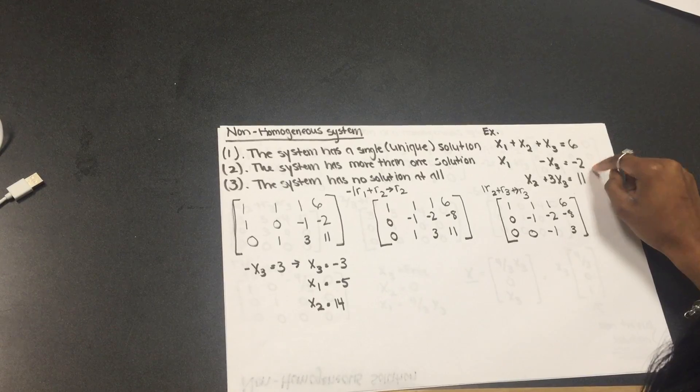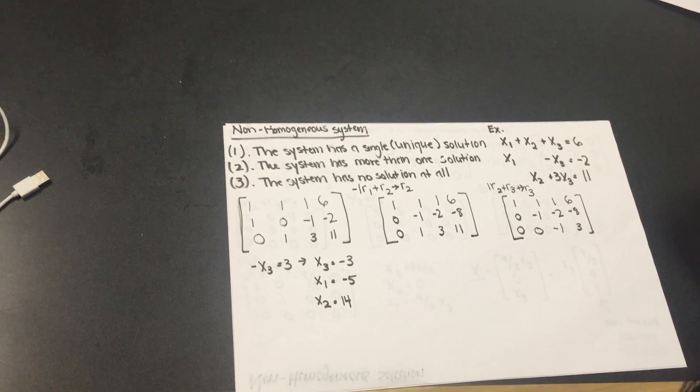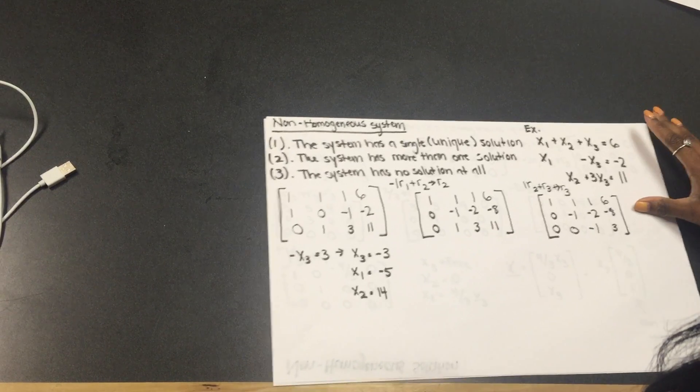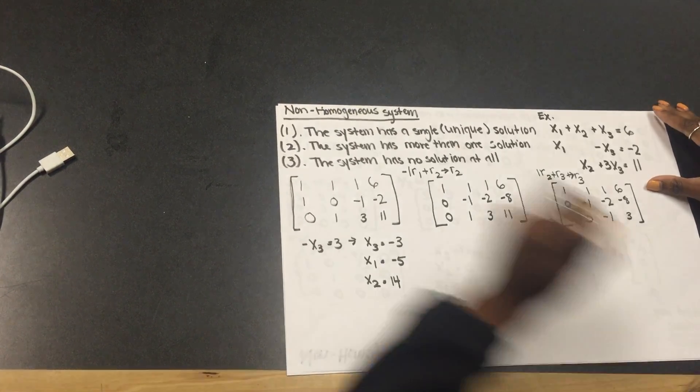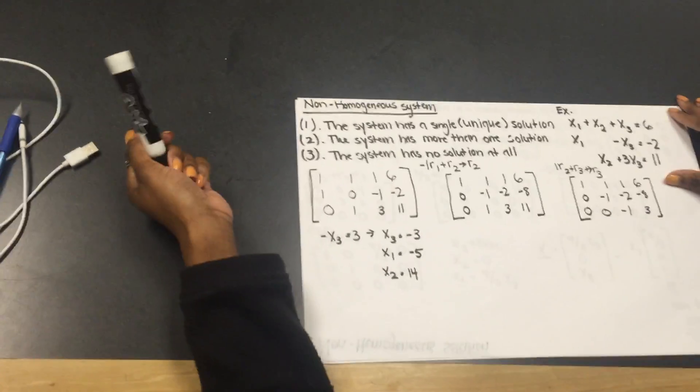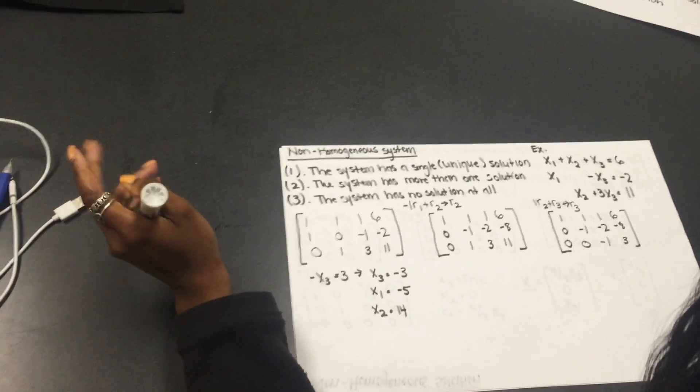x1 plus x2 plus x3 is equal to six. x1 minus x3 is equal to negative two. x2 plus 3x3 is equal to a minus. So, first you put in an augmented matrix, and then you do elementary row operations to find the solution, or find if it's trivial or non-trivial.